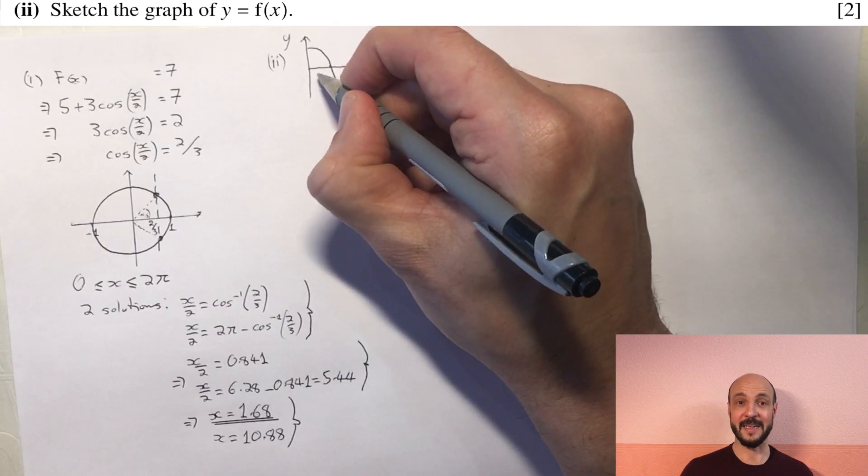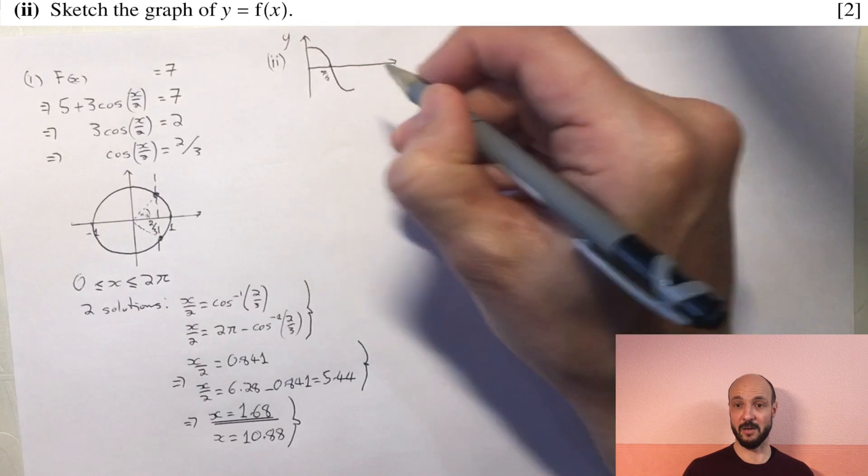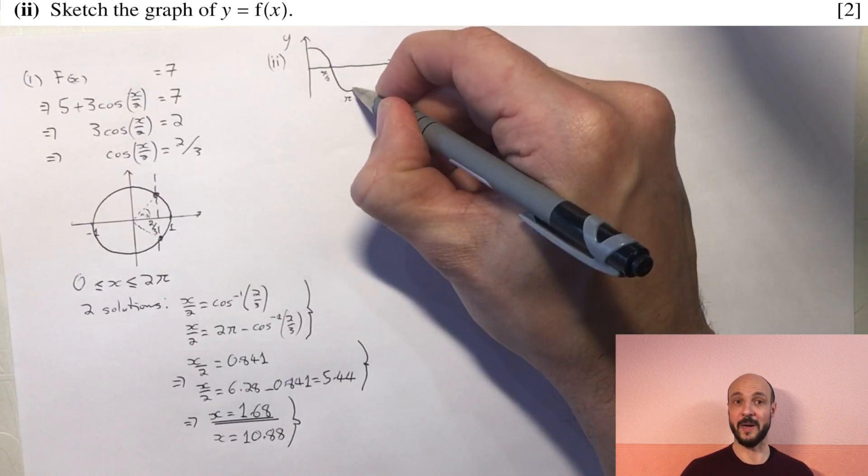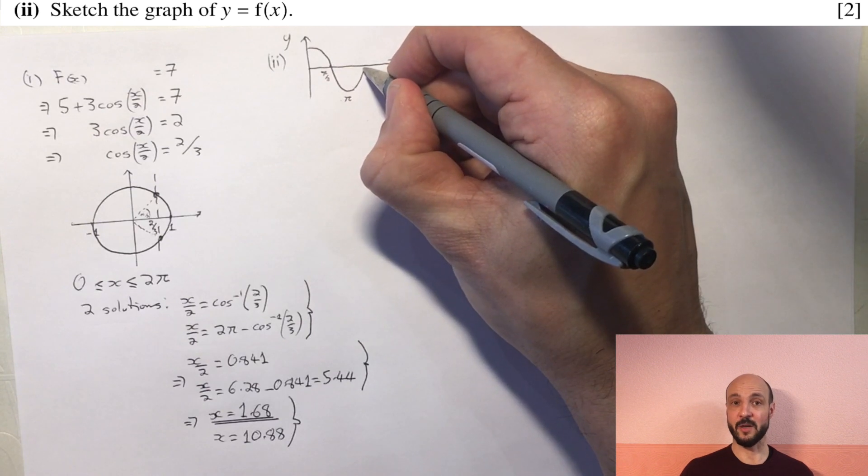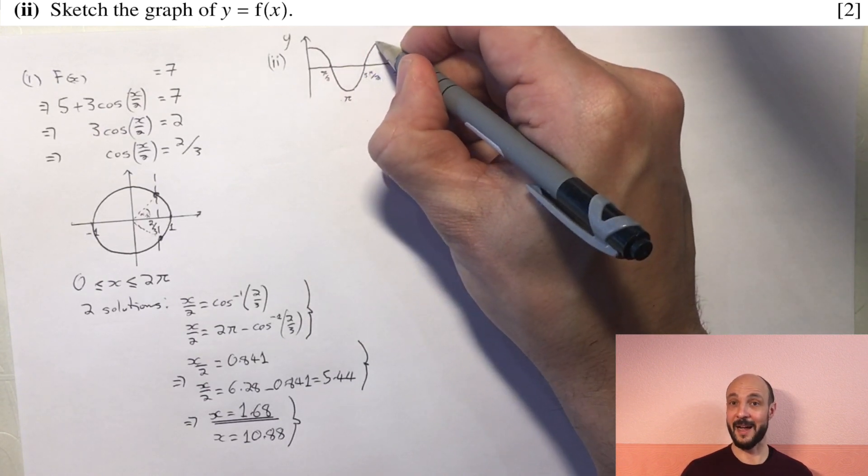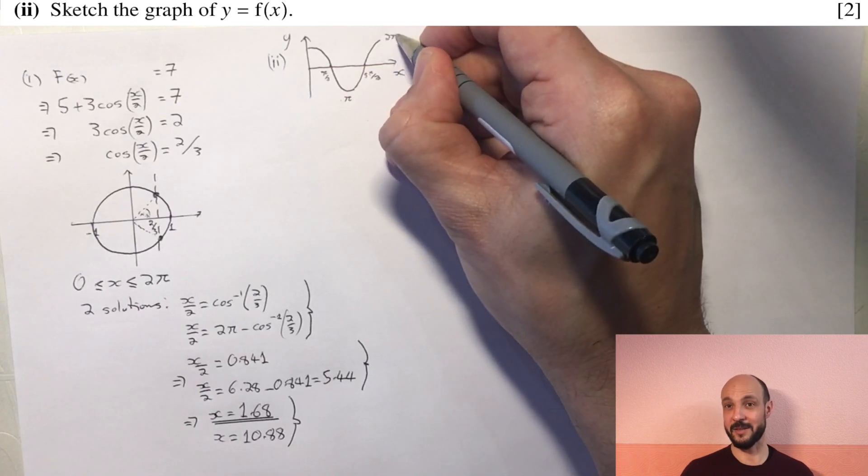So the best way to do this is to start at the inside and say instead of cosine x we've got cosine of x over 2. So if we draw our regular cosine x graph just between 0 and 2π, cosine of x over 2 is a compression of the graph by a half.